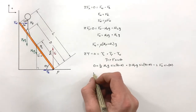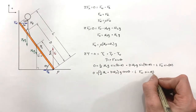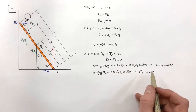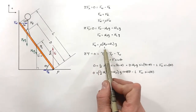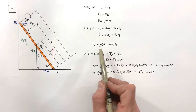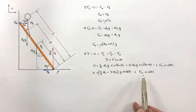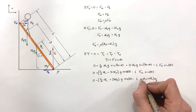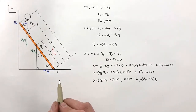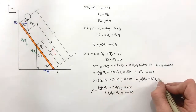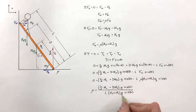Since sine of (90 minus theta) equals cosine of theta, we can clean up the equation. We now have an expression relating the torques to fw. We previously derived an expression relating the individual masses to fw, so we substitute that in. Then we rearrange the entire equation to solve for mu.